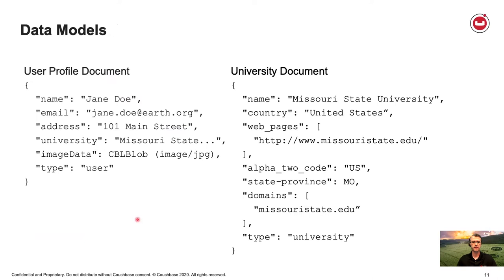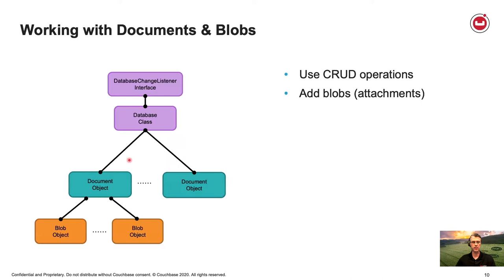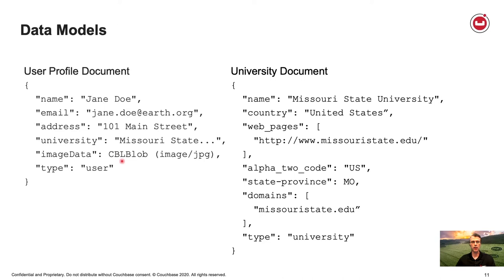The data models in use in the user profile demo: there are two. We have a user profile database and a university database. The user profile document is pretty simple — it's just a name, email address, a physical address, the university, and image data which is the blob. This is a way to store non-JSON data associated with a document — typically images, but any type of binary data. These blobs are attached to your document, similar to what was previously called attachments in Couchbase. The university database is pre-built and populated with documents about different universities for quick lookup.